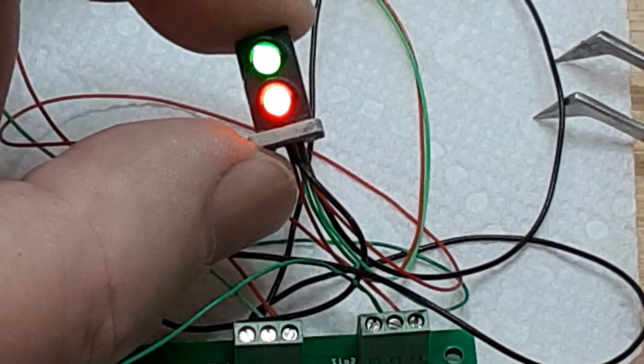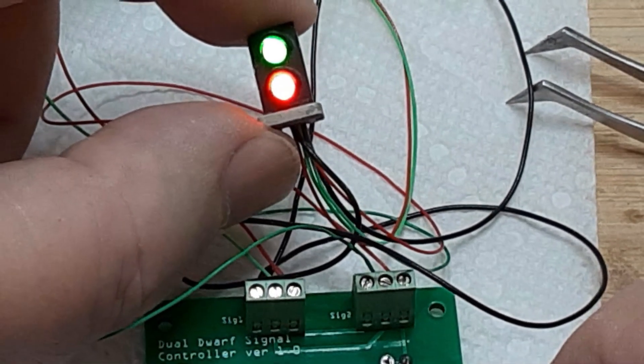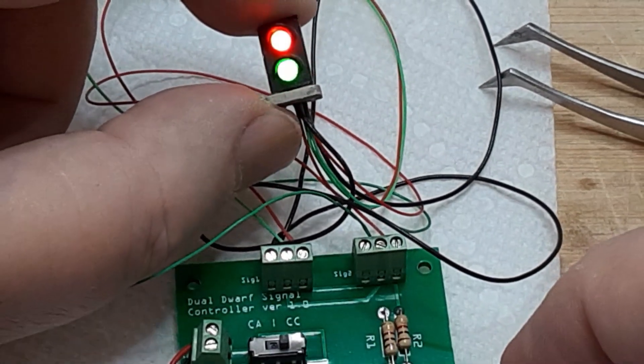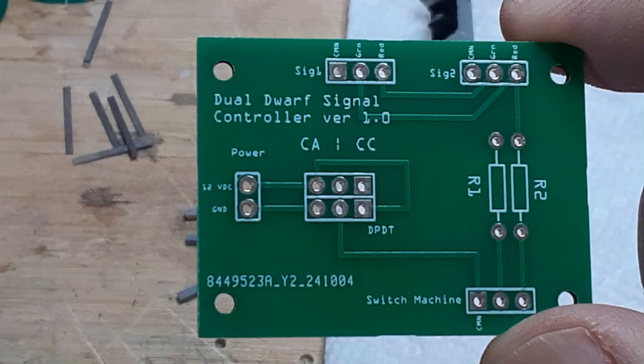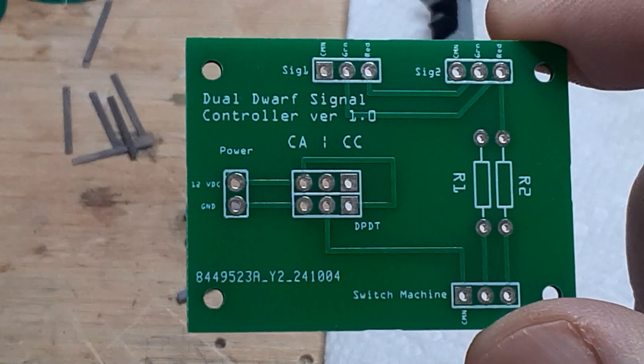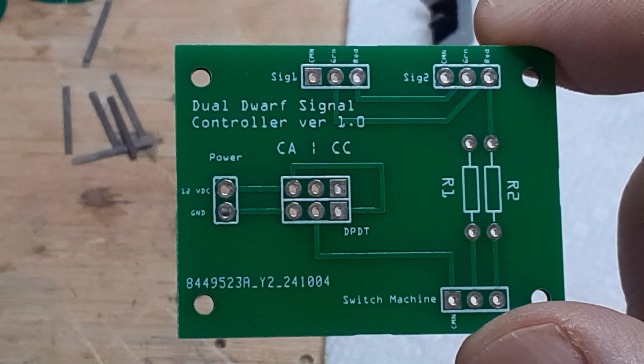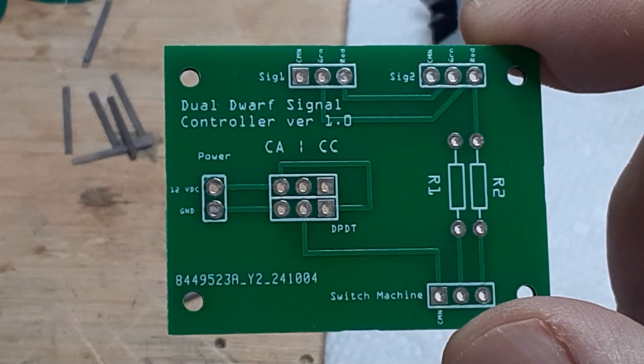This type of signal would have five connections: a common connection, two red connections, and two green connections. I have included a link to this two dwarf signal controller PCB design, which will work for either of these scenarios.